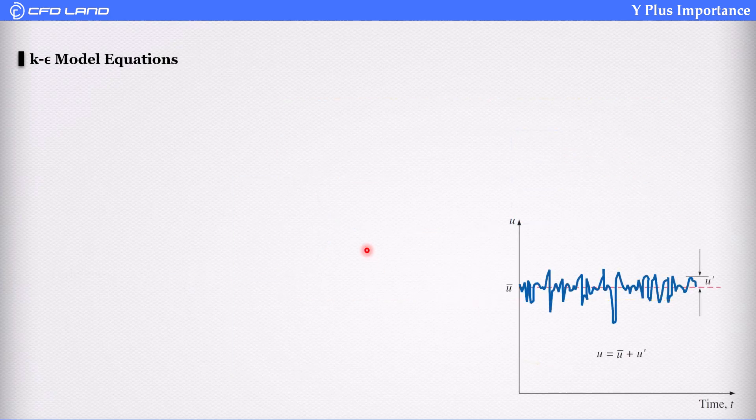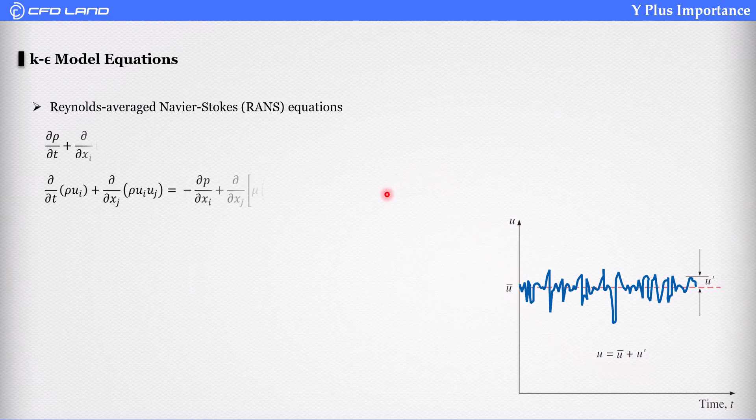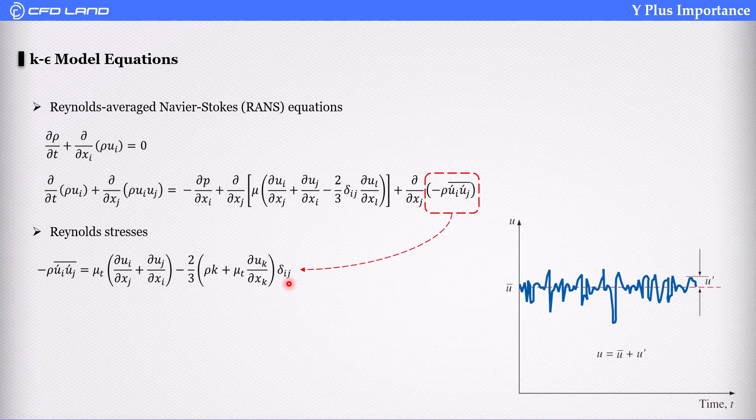Now, k-epsilon uses a RANS approach, meaning it uses average values. Velocity is defined as an average value plus fluctuations. When you input this definition of velocity into Navier-Stokes equation, an extra term appears. This term is called Reynolds stress, and it is unknown to us. So we need to rewrite it in terms and parameters that are known or achievable for us.